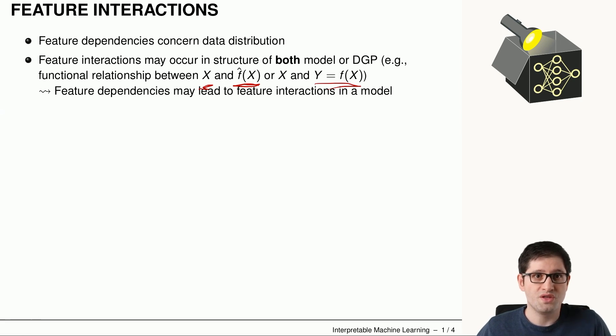So feature dependencies usually can also lead to feature interactions in a model. Because if features are dependent in the data, a machine learning model tends to estimate also interaction.